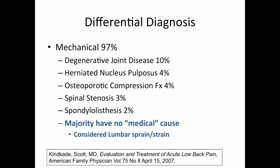Almost 97% of low back pain is considered mechanical. Breaking that down into degenerative joint disease, herniated discs, compression fractures, spinal stenosis, and spondylolisthesis still doesn't add up to 97% — so a huge proportion above 70% has no known medical cause. That falls into nonspecific low back pain, lumbar sprain and strain, and somatic dysfunction. If there's no other medical diagnosis, the primary treatment can be osteopathic manipulative medicine.